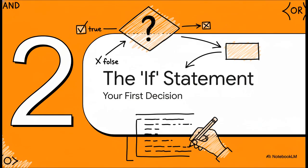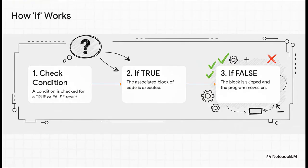This little guy is the foundation for almost every piece of logic in programming. The logic is actually beautiful in its simplicity. It's a three-step dance. First, the program asks a simple yes or no question. We call that the condition. Second, if the answer is yes or true, it runs a specific chunk of code. And third, if the answer is no or false, it just skips right over that code and keeps on going. That's it.